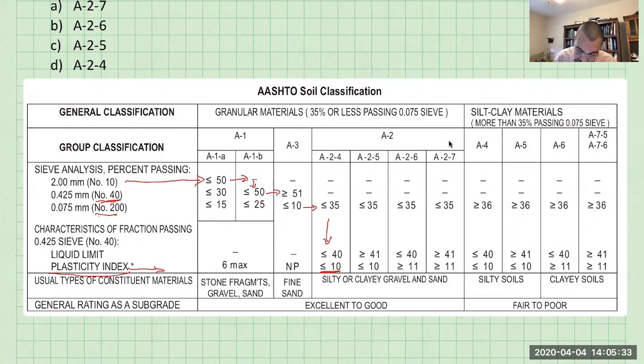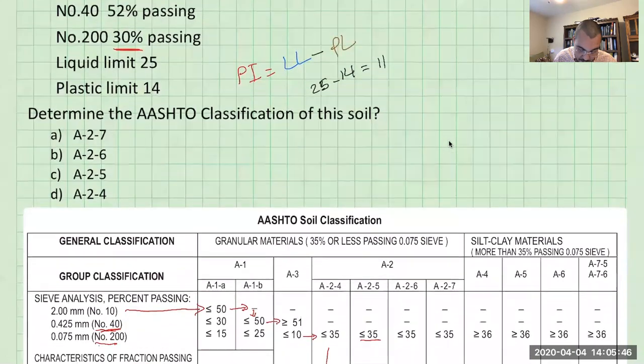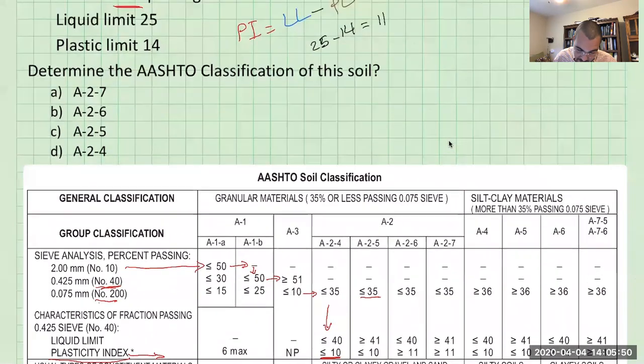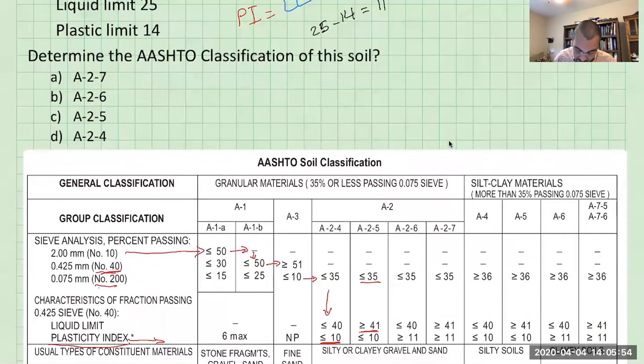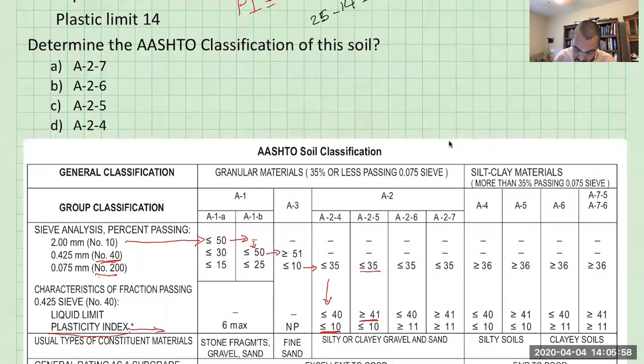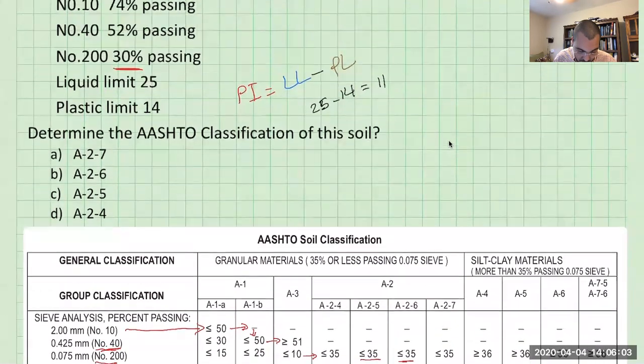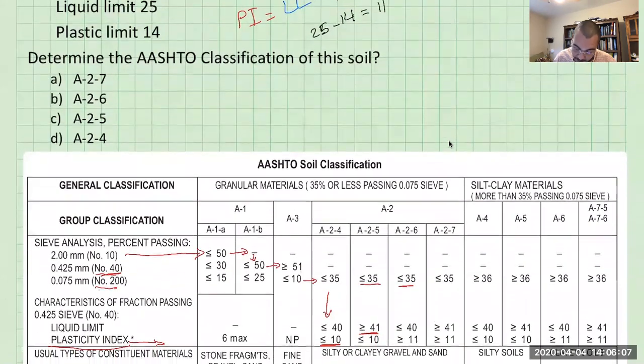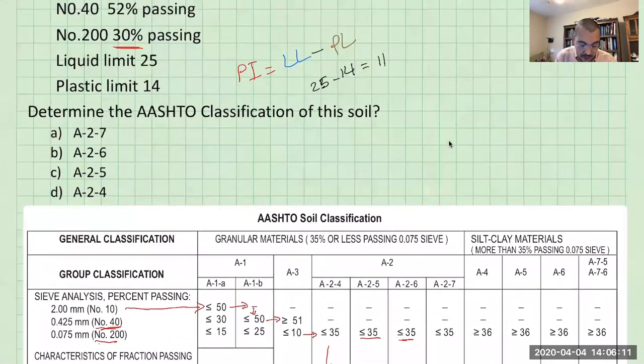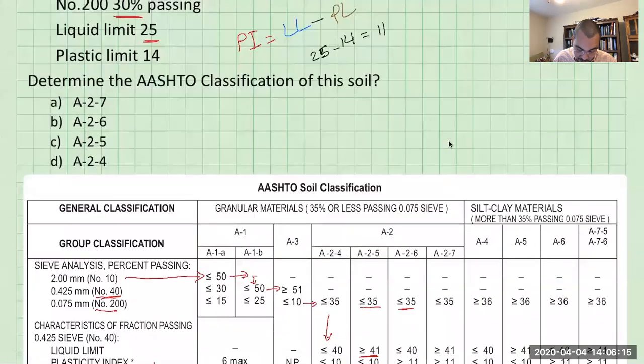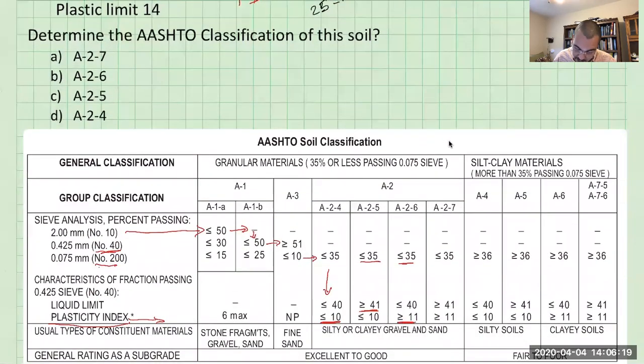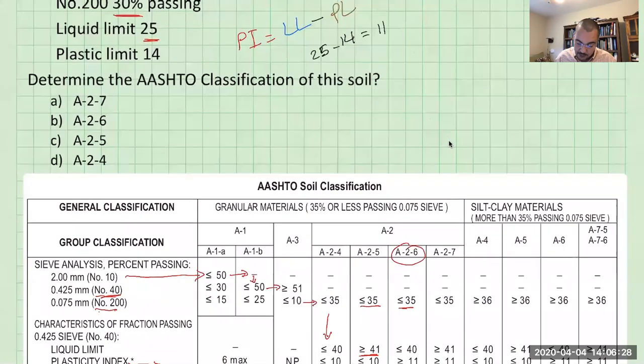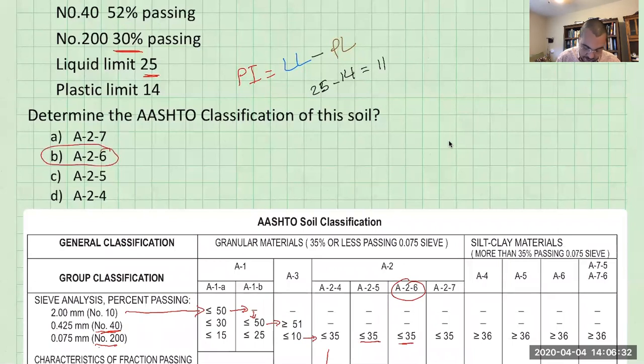So now we move to A2-5. Now, this condition is satisfied. We know that our number 200, passing the number 200 is 30 percent. But the liquid limit that we have is 25. So it's not greater than 41. So we can't use this. So we go to this soil. So passing the number 200, what do we have? We have 30 percent. That's fine. And then the liquid limit 40 is greater than the 25 that we're given. That's also fine. How about our plasticity index? We have 11. And this is greater than or equal to 11. So we found it. Our soil is A2-6 in this case. So that checks out.